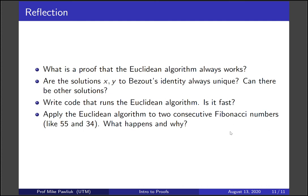Write code that runs the Euclidean algorithm. Is it fast? Apply the Euclidean algorithm to two consecutive Fibonacci numbers, for example 55 and 34. What happens and why? Thank you very much, and have a great day!